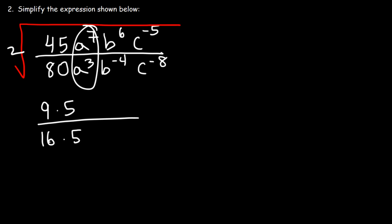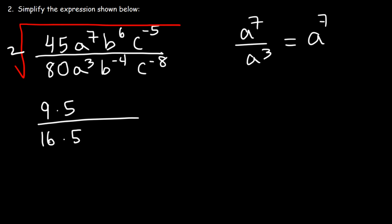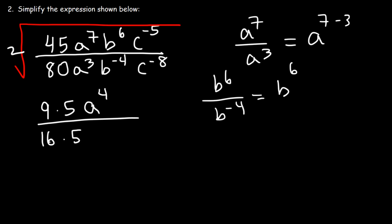8 to the 7th divided by a cubed — when you divide by a common base, you need to subtract the exponents. 7 minus 3 is 4, so this is going to be a to the 4th. Now b to the 6th divided by b to the negative 4th is b to the power of 6 minus negative 4, which is basically 6 plus 4, so that's b to the 10th.